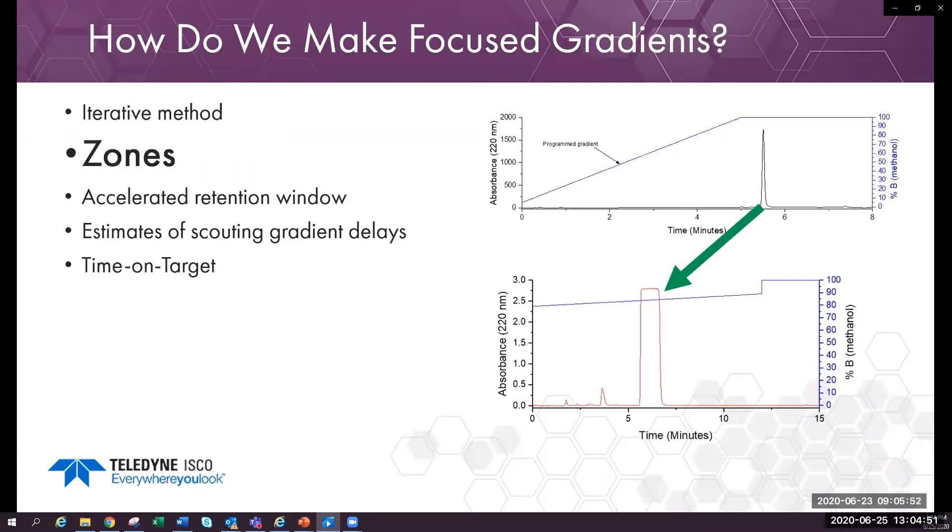The brand and chemistry should be the same. For example, use a ReadyCEP C18 AQ analytical column with a ReadyCEP C18 AQ prep column. You can still use the prep column for both the scouting and prep run. The next method, zones, is also very commonly used.